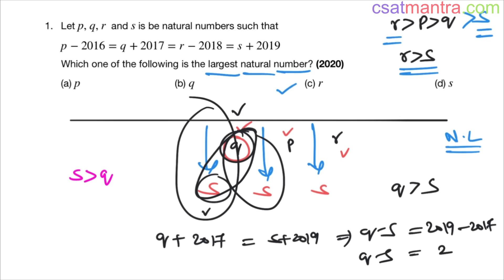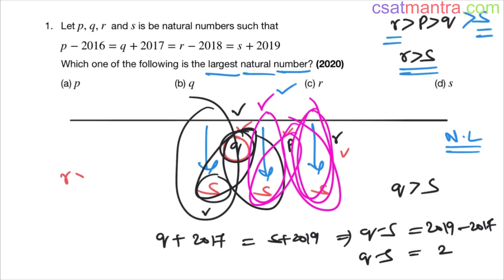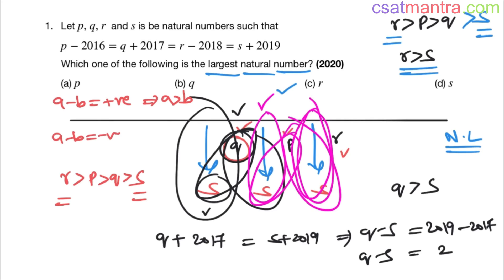So the order of magnitudes is: r is the largest and s is the smallest. The whole problem is based on this concept: if a minus b is positive, then a is greater than b; if a minus b is negative, then a is less than b. There are a number of questions asked based on this concept as statement problems. Hope this is clear.